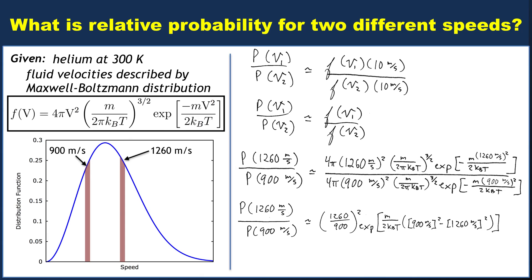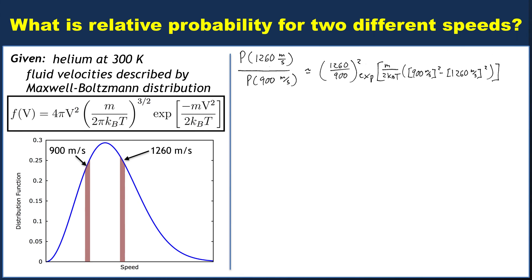We're going to need to know M and T in addition to the speeds. Well, T is given as 300 Kelvin. By now you can figure out if we're talking about atomic helium, the mass per atom is 6.64 times 10 to the minus 27 kilograms.